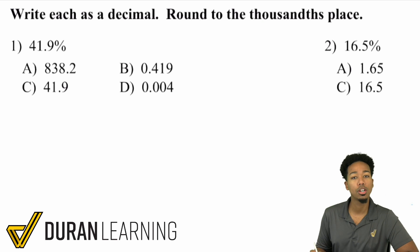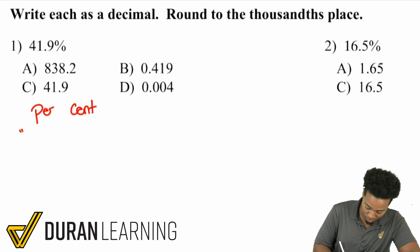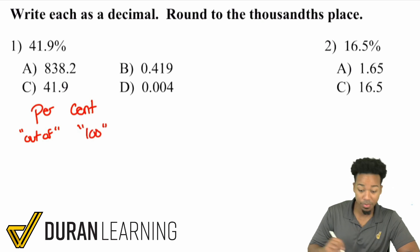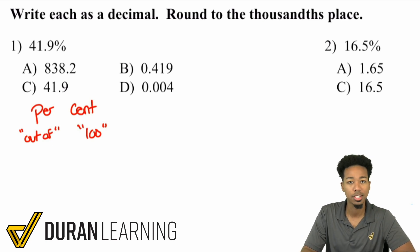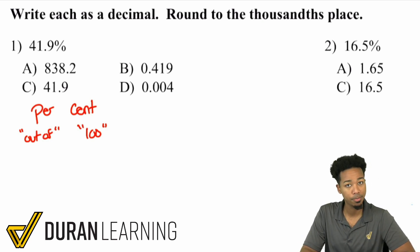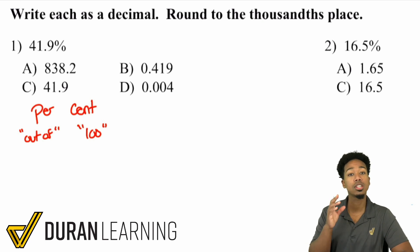What you're going to do is understand what the word percent means. Percent literally translates to 'out of 100' — that is literally what percent means: out of, or for every, 100. And so what that means is very simple: out of 100 means divide by 100. So to turn a percent into a decimal, write this down — divide it by 100.